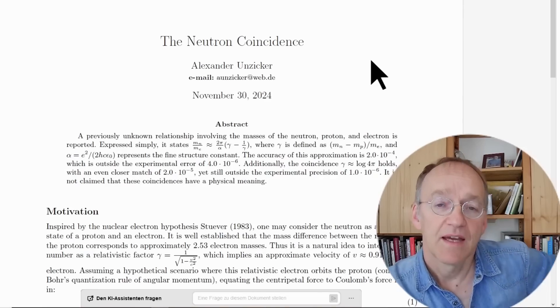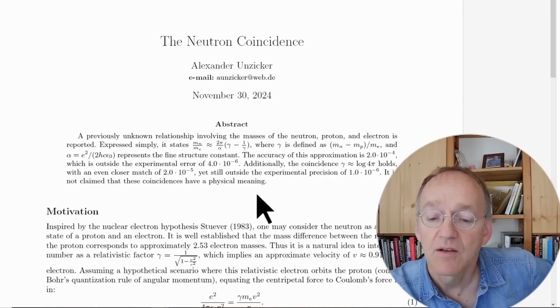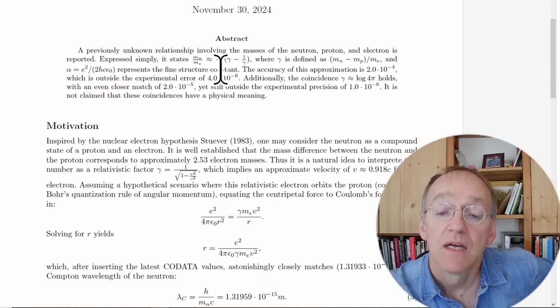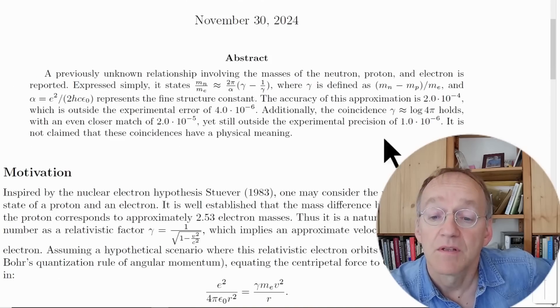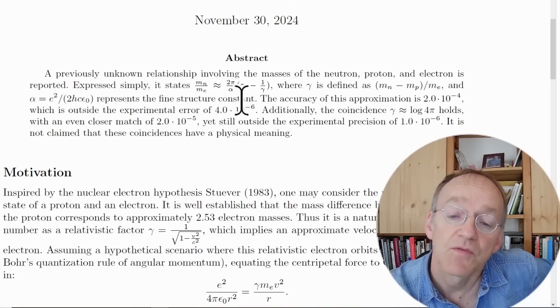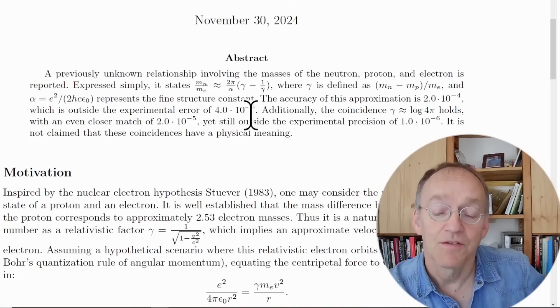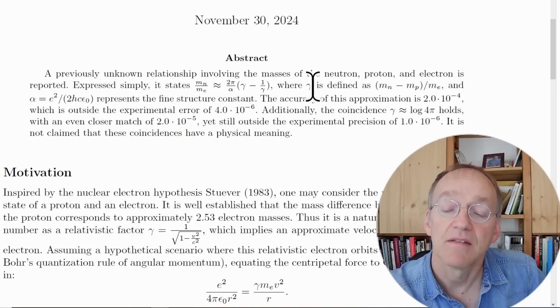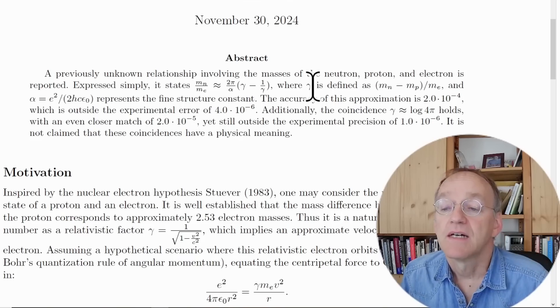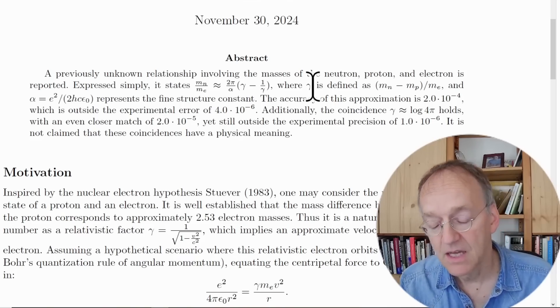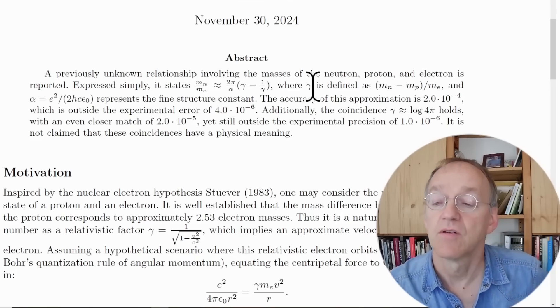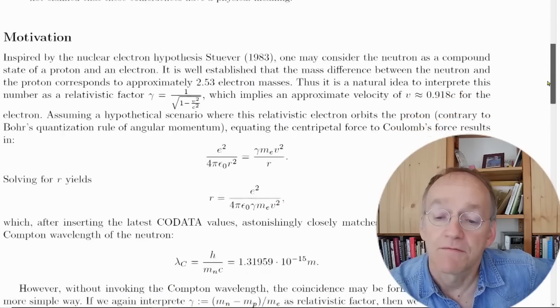Let's walk through the paper. This is the way I prefer to phrase it right now. The ratio of the neutron and electron mass could be phrased in this way relating it to the fine structure constant, and gamma is the relativistic factor 2.53 of the electron. At the same time, it is the mass difference of neutron and proton in units of the electron mass.